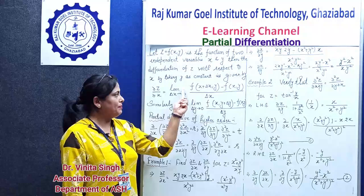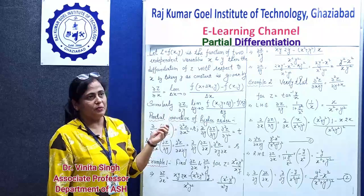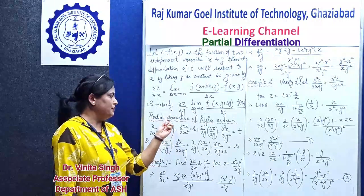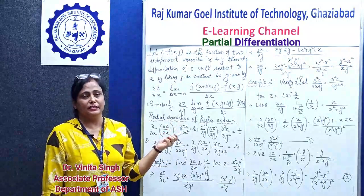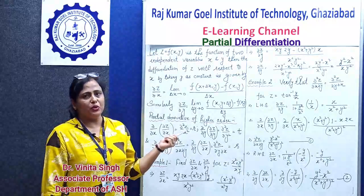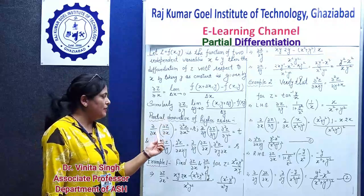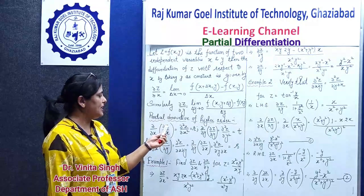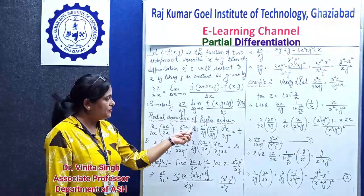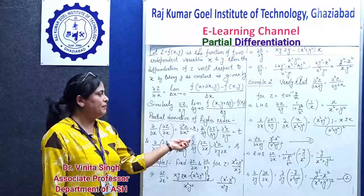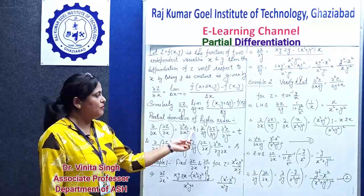This is called the first order partial derivative. Now we will find the higher order derivatives. In Engineering Mathematics 1, we find higher orders for functions of 2 or more variables. For higher order: ∂/∂x applied to ∂z/∂x gives ∂²z/∂x², and this is denoted by r. This is a universal symbol — r.